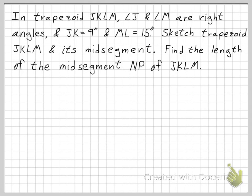What kind of problems might you expect regarding trapezoids? Here is one: in trapezoid JKLM, angle J and angle M are right angles, the measure of JK equals 9 inches, and the measure of ML equals 15 inches. Sketch trapezoid JKLM and its mid-segment, then find the length of mid-segment NP.